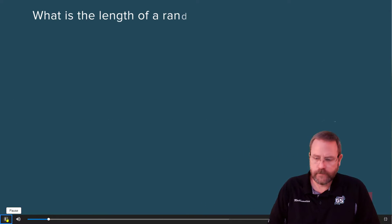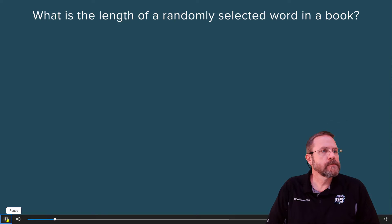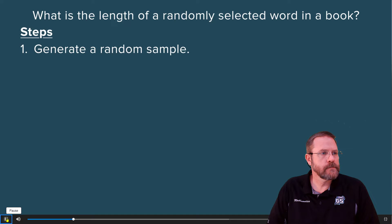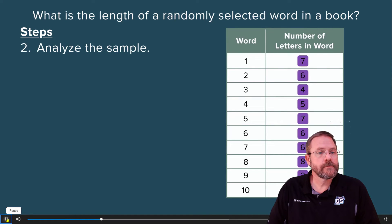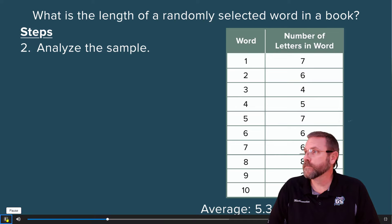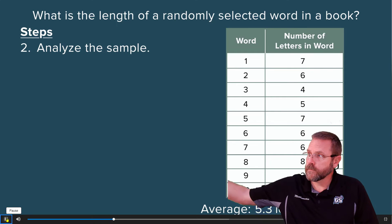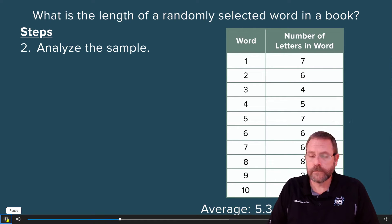Suppose you want to answer the statistical question: what is the length of a randomly selected word in a book? Start by generating a random sample. Count the number of letters in 10 randomly selected words on a randomly selected page of the book. Next, analyze the sample by finding the average number of letters in the 10 randomly selected words. How can you be sure that the results from this sample are representative of the length of words throughout the entire book?